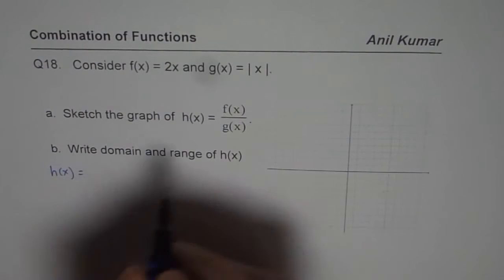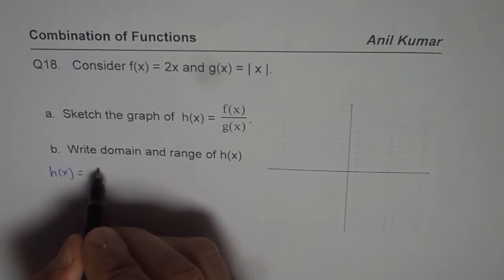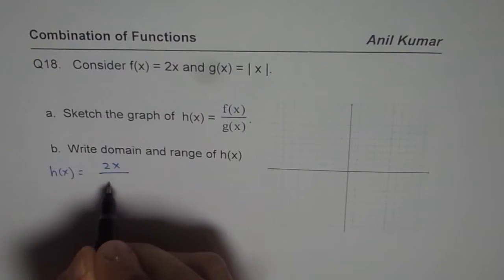So we have h of x as ratio of f of x and g of x, that means 2x over absolute x.